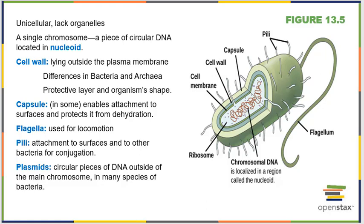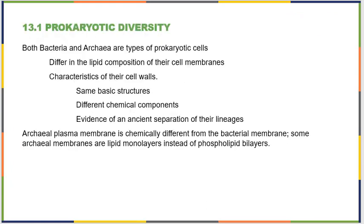Finally, prokaryotes have plasmids — extra little circular pieces of DNA outside of the main chromosome. We tend to find plasmids in many species of bacteria.